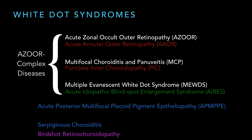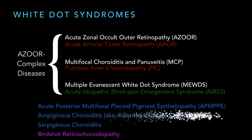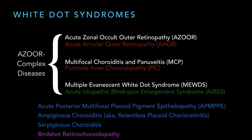Kind of running into the end of my lecture, so let's just review. We talked about the AZOR complex diseases — AZOR, MCP, MUDES — and their little siblings: PIC being the main one you need to know, AAOR and AIBES not as important, although AIBES is way more common than some of these others. Then I talked about AMPPE and serpiginous, and this other one called relentless placoid chorioretinitis — or they originally wanted to call it ampiginous chorioretinitis, but the journal rejected that name. So just remember: MCP and PIC are related, MUDES and AIBES are related, and you've got this continuum with serpiginous, ampiginous, and acute AMPPE. And birdshot is very different from all the rest.